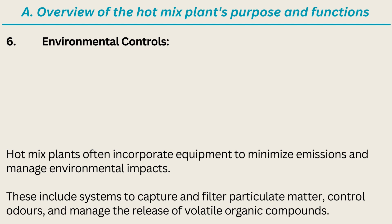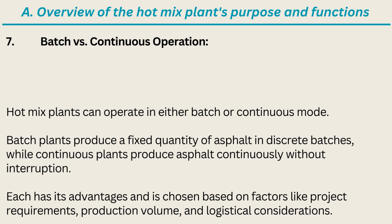Six, environmental controls — hot mix plants often incorporate equipment to minimize emissions and manage environmental impacts, including systems to capture and filter particulate matter, control odors, and manage the release of volatile organic compounds. Seven, batch versus continuous operation — hot mix plants can operate in either batch or continuous mode. Batch plants produce a fixed quantity of asphalt in discrete batches, while continuous plants produce asphalt continuously without interruption. Each mode has its advantages and is chosen based on project requirements, production volume, and logistical considerations.